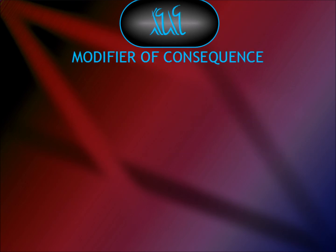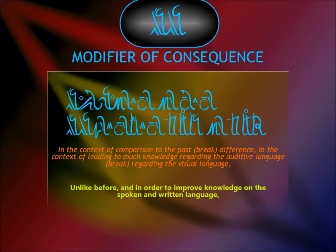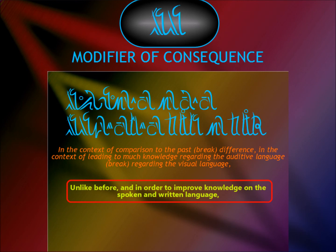Closely related to the modifier of cause is the one of consequence, effect or intention: 'iris'. There's also an example of this modifier in the ninth video: 'iris ka ira e ira, emeger ta emegen' — this means for a better understanding of the written and spoken language.